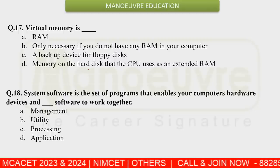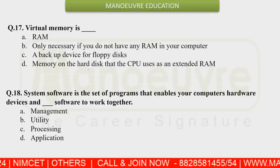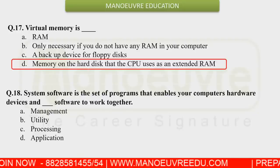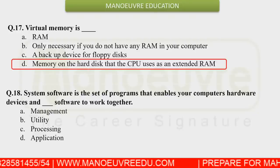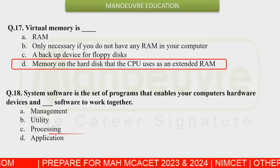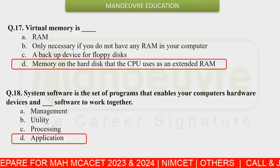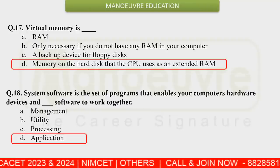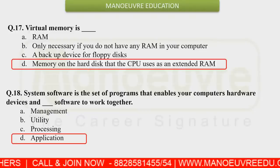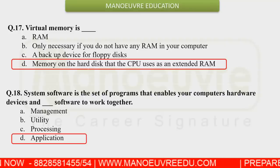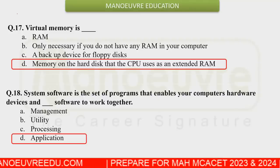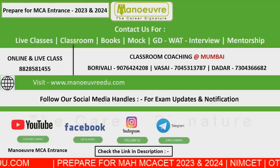Regarding memory, virtual memory is available on the hard disk and the CPU uses it as extended RAM. System software is the set of programs that enables your computer hardware and devices to work together with software, making the computer operate properly.